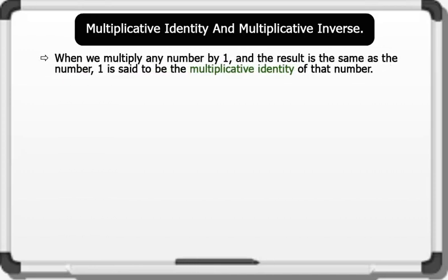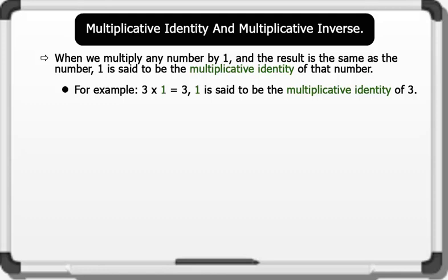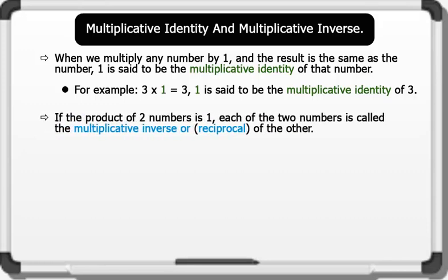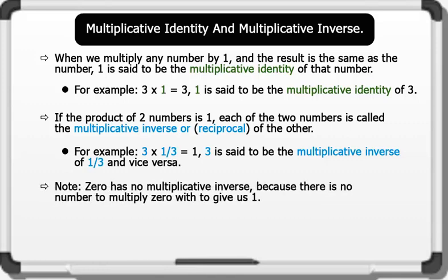Multiplicative Identity and Multiplicative Inverse. Multiplicative Identity: when we multiply any number by 1 and the result is the same as the number, it is said to be the multiplicative identity of that number. For example, 3 times 1 equals 3 — 1 is said to be the multiplicative identity of 3. Multiplicative Inverse: if the product of two numbers is 1, each of the two numbers is called the multiplicative inverse or reciprocal of the other. For example, 3 times 1 over 3 equals 1 — 3 is said to be the multiplicative inverse of 1 over 3, and vice versa. Note: 0 has no multiplicative inverse, because there is no number to multiply 0 with to give us 1.